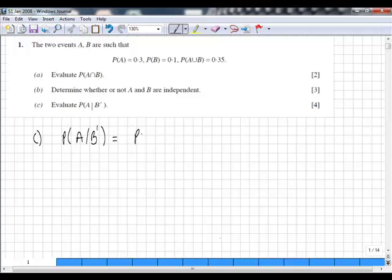Well, this is a standard formula. It's A and B dash, A and B dash, over the probability of B dash.